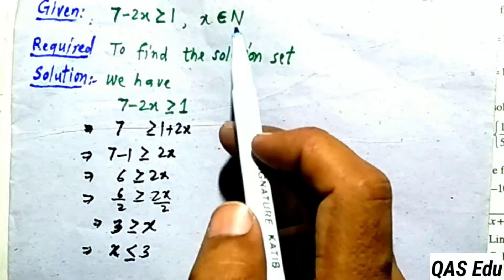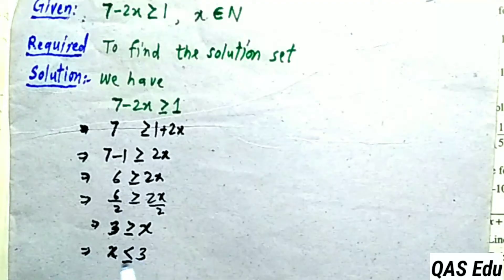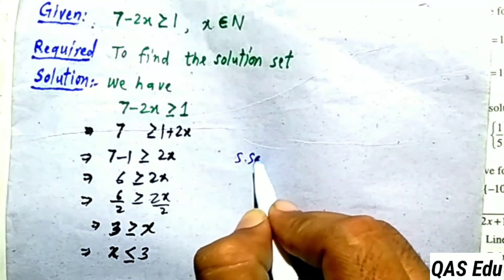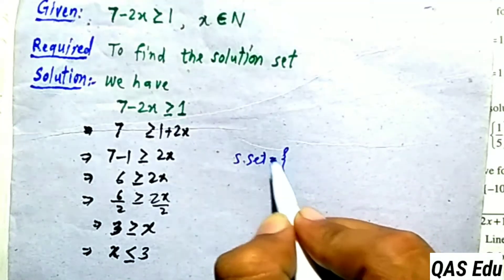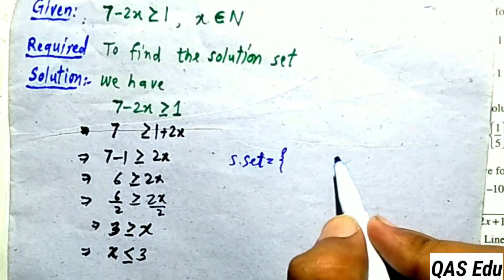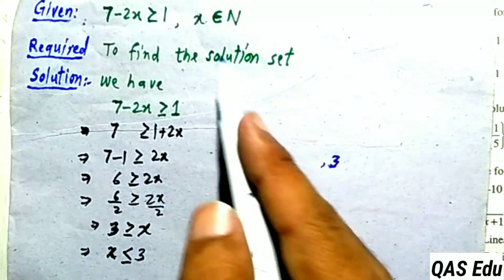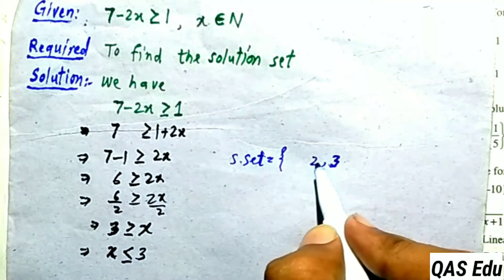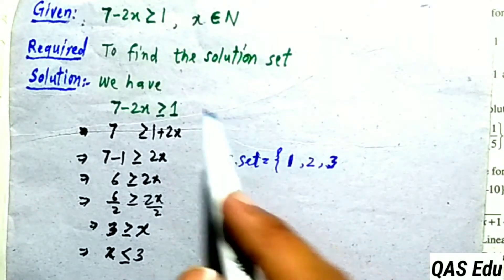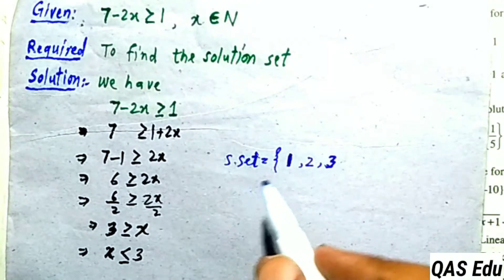Now applying the restriction that x belongs to natural numbers, x must be less than or equal to 3. The natural numbers less than or equal to 3 are 1, 2, and 3. Note that 0 is not a natural number — it belongs to whole numbers, so 0 is not included.